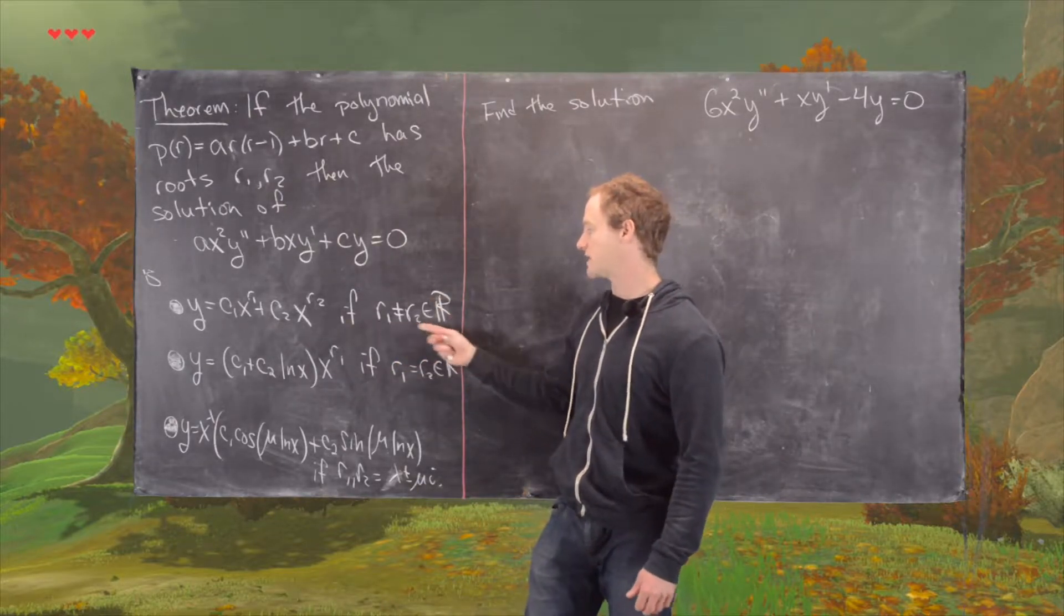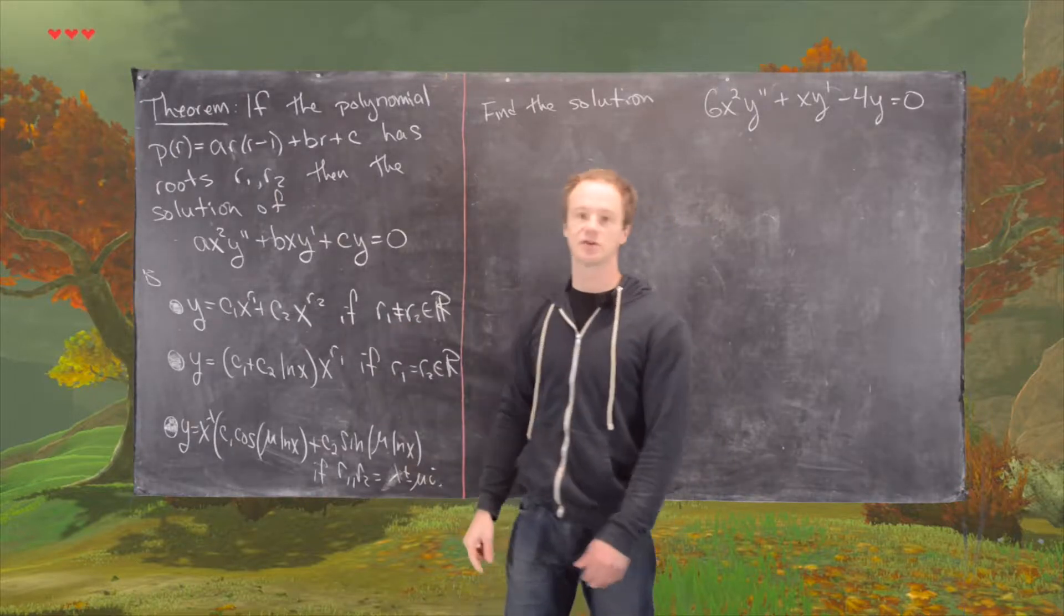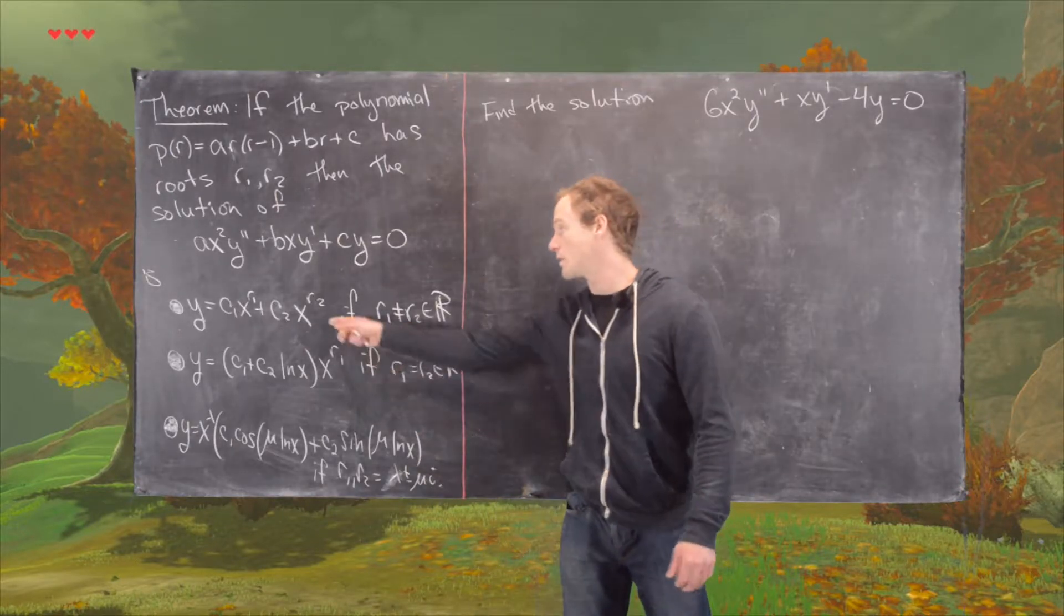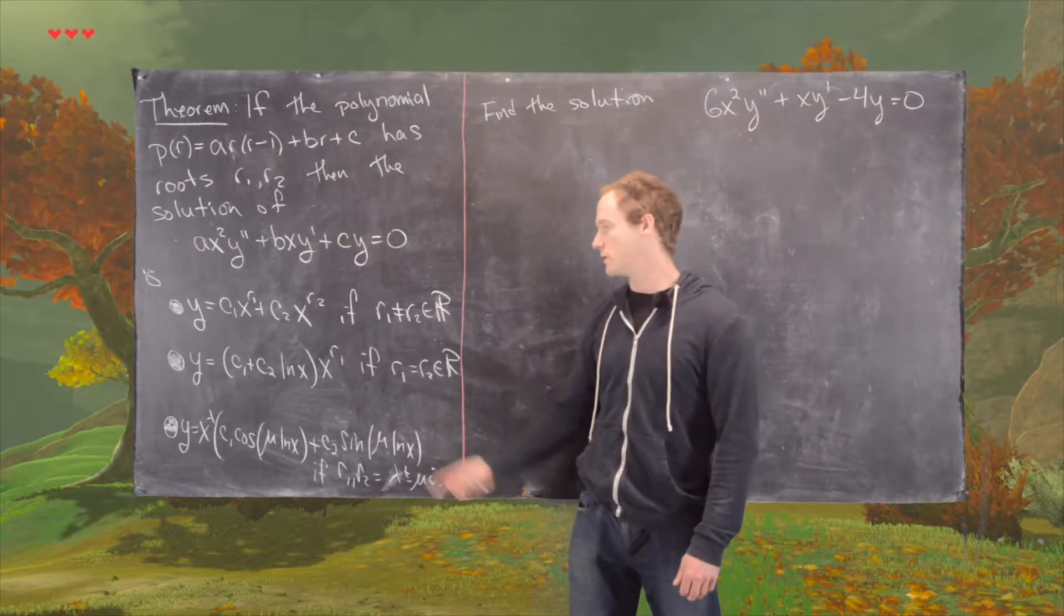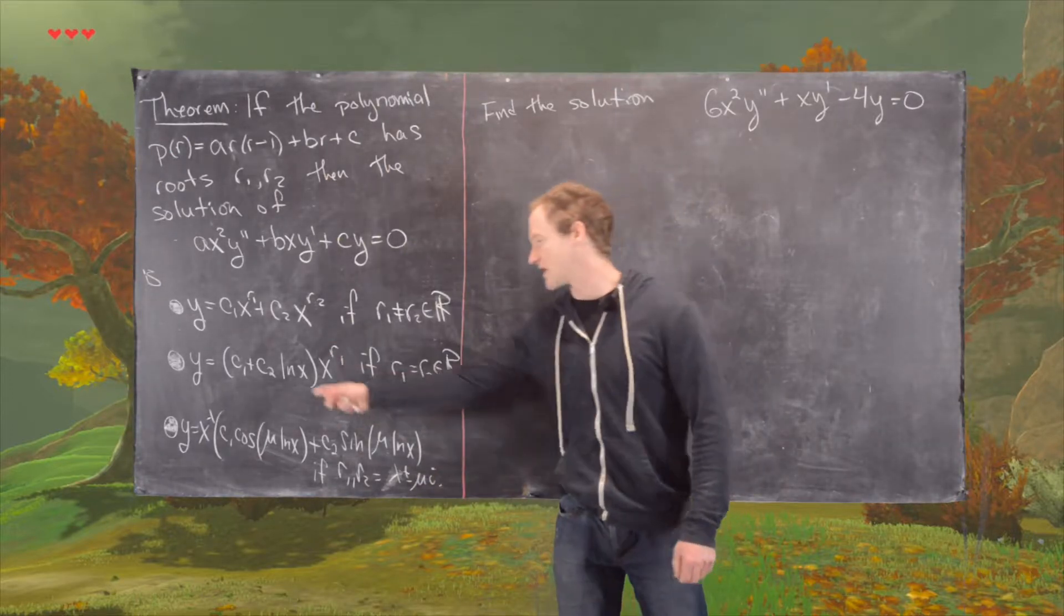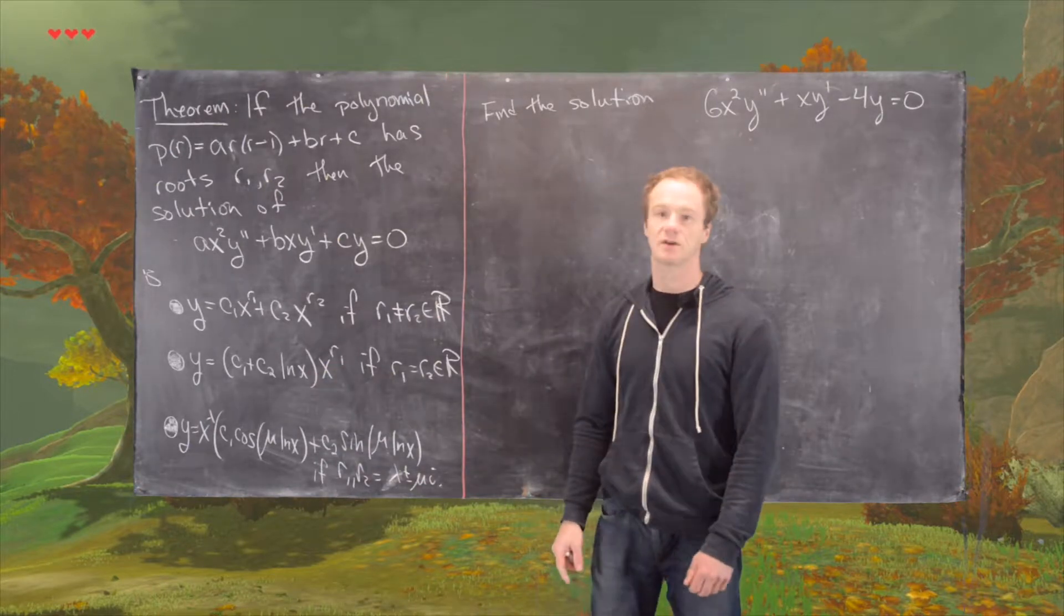So, if you have two real roots that are distinct, you get the solution that's C1X to the R1 plus C2X to the R2. If you get a repeated real root, then you have C1 plus C2 natural log of X, X to the R1.